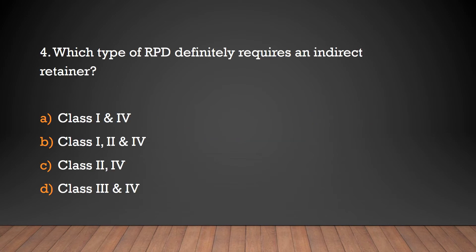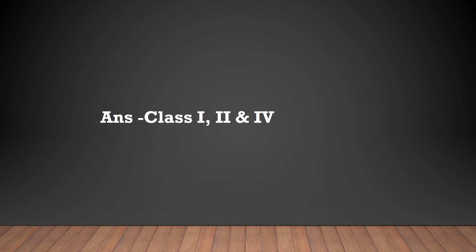Which type of RPD definitely requires an indirect retainer? Class 1 and Class 4, Class 1 only, Class 2 and Class 4, Class 2 and Class 4, Class 3 and Class 4, or Class 1, 2, and 4? The answer is Kennedy's Class 1, Class 2, and Class 4.